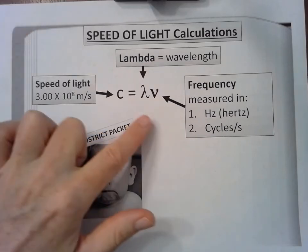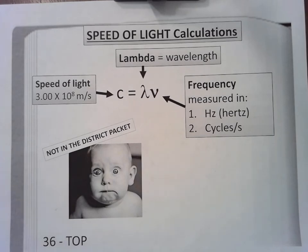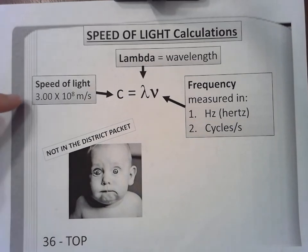You should have the formula plus labeling what the different symbols mean. Lowercase C is equal to this symbol that looks like an upside-down Y, which is called lambda, times frequency, which looks like a V and is called nu — if you read it in the textbook. So C is equal to lambda times nu.